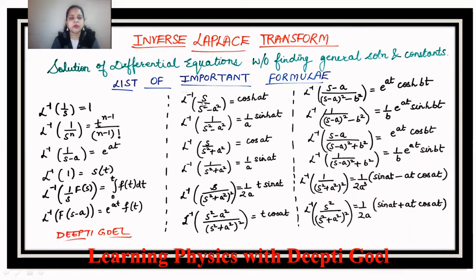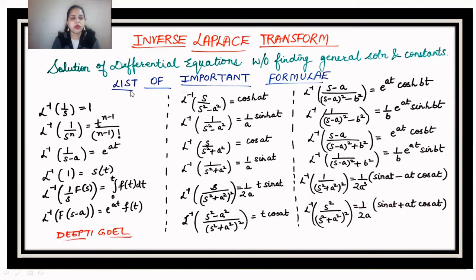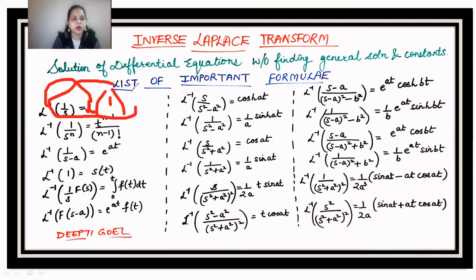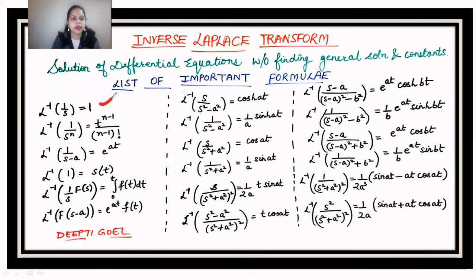Let us now discuss some important formulas that appear in inverse Laplace transforms. These are derived directly from the Laplace transform relations. The first formula: Laplace inverse of 1/s is equal to 1, because the Laplace of 1 is 1/s. When we take the Laplace to the other side it becomes the Laplace inverse, so Laplace inverse of 1/s equals 1.